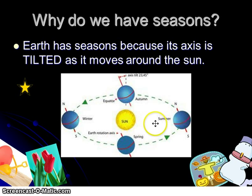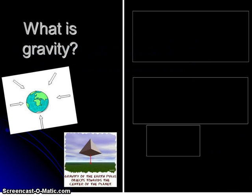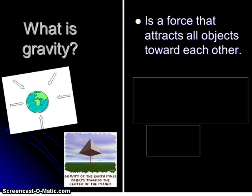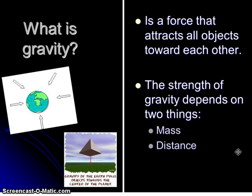When we look at the earth revolving around the sun, let's talk about the first reason that we have things revolving in space — that is due to gravity. Gravity is a force of attraction that pulls all objects towards each other. There are two things that affect the strength of gravity, and you need to write these on your note-taking sheet: mass and distance.